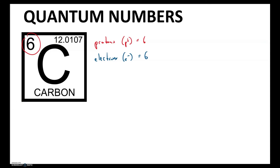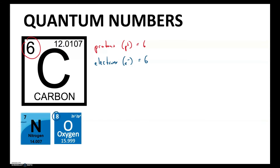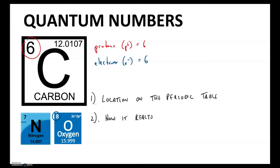If we're looking at carbon, we know it has six electrons. Nitrogen has seven, oxygen has eight, and so on. It's where electrons are placed around the nucleus that determines two things: one, an element's location on the periodic table, and two, what we defined back in chapter one as chemical properties. Where we put electrons is what's defined by quantum numbers.